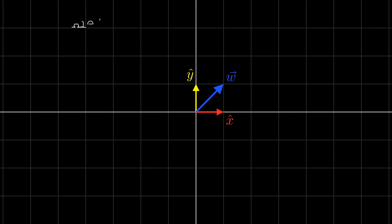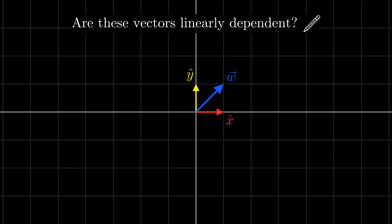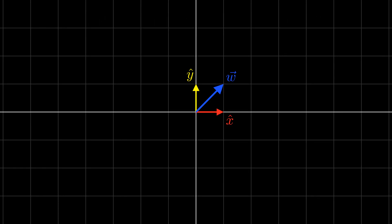I am going to show you several sets of vectors. For each one, determine if the set is linearly dependent or linearly independent. Let's first look at these vectors. Are these vectors linearly dependent? This is what we already looked at. We saw that the span is unchanged if w is removed, showing that these vectors are linearly dependent.